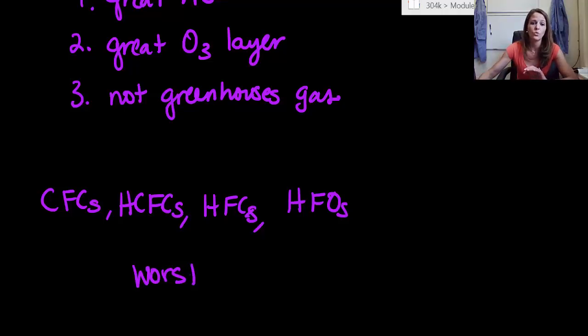Alright, worst for our planet? Definitely CFCs. They are the ones that destroy our ozone layer, they are absolutely terrible for us. If you had to pick one that was worse, it's definitely your chlorofluorocarbons. Now next question: which one is the best for our planet? Go.